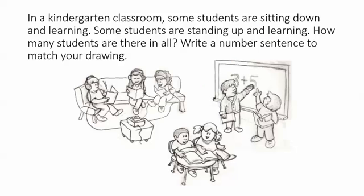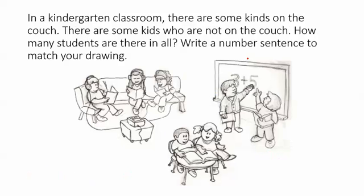Go back and really make sure that after each sentence you stop and draw. Some students are sitting down and learning - stop and draw. Some students are standing up and learning. Five were sitting down learning, some students are standing up and learning. How many students are there? Five plus two equals seven. Do another one, same kind of thing, same story, just quickly reviewing.